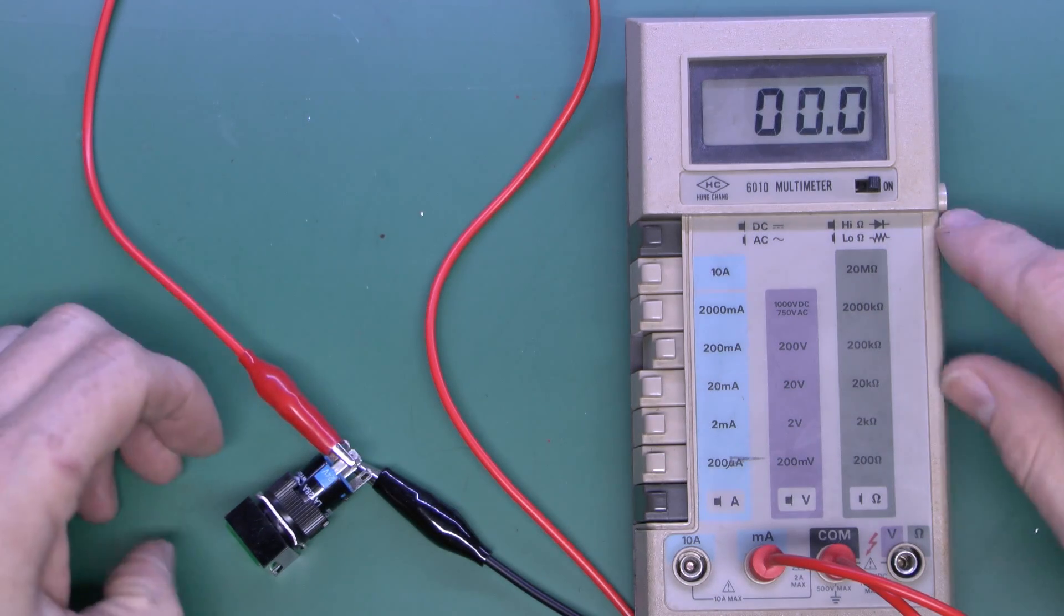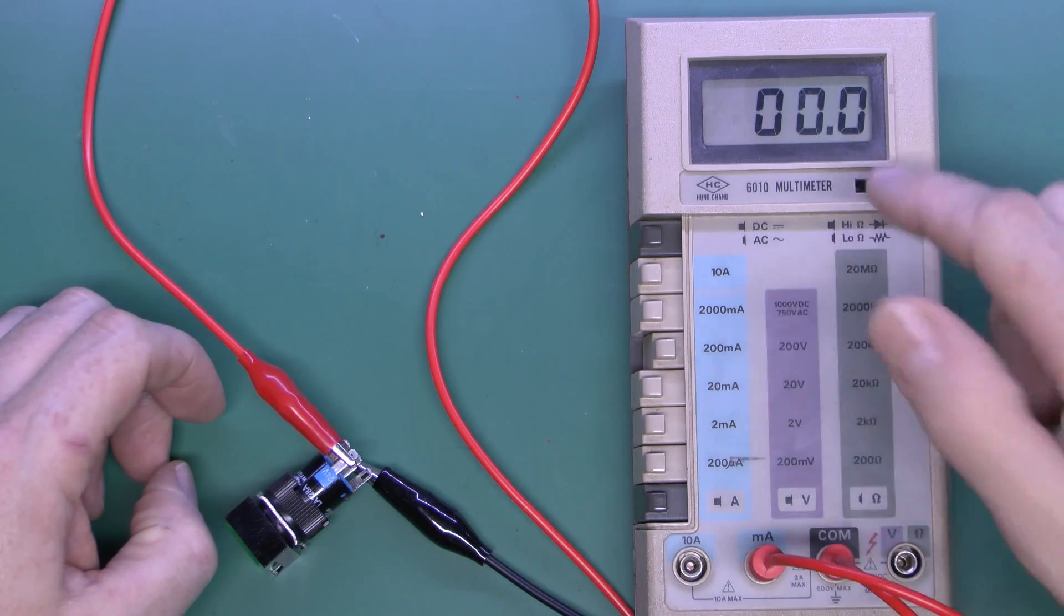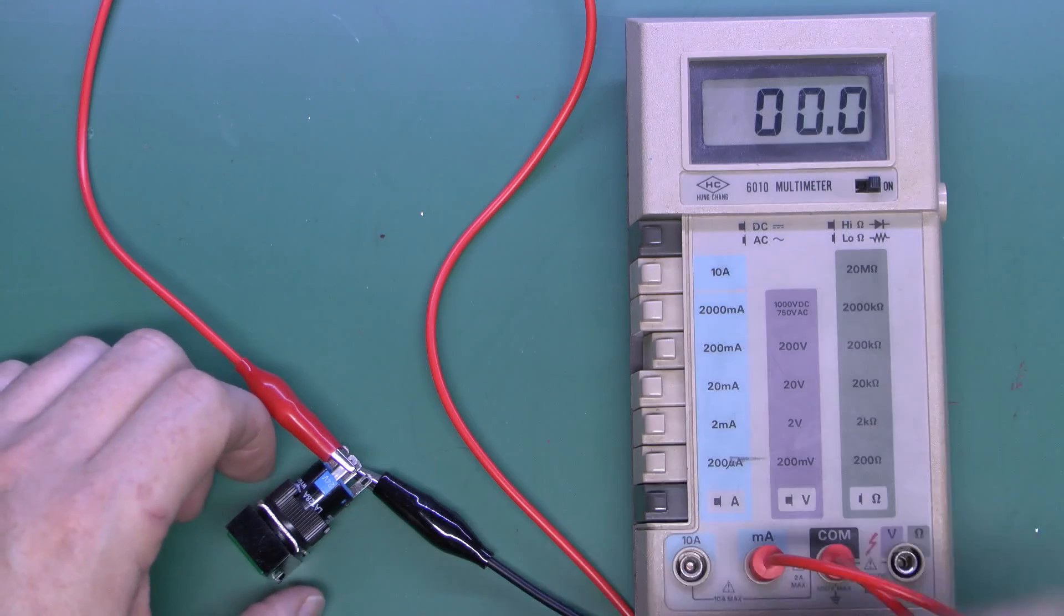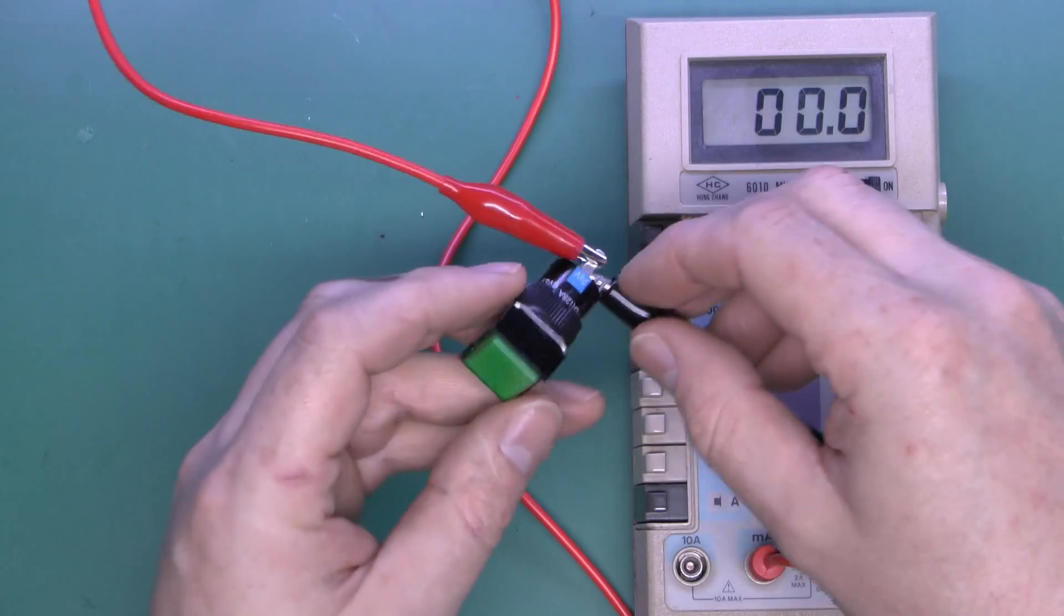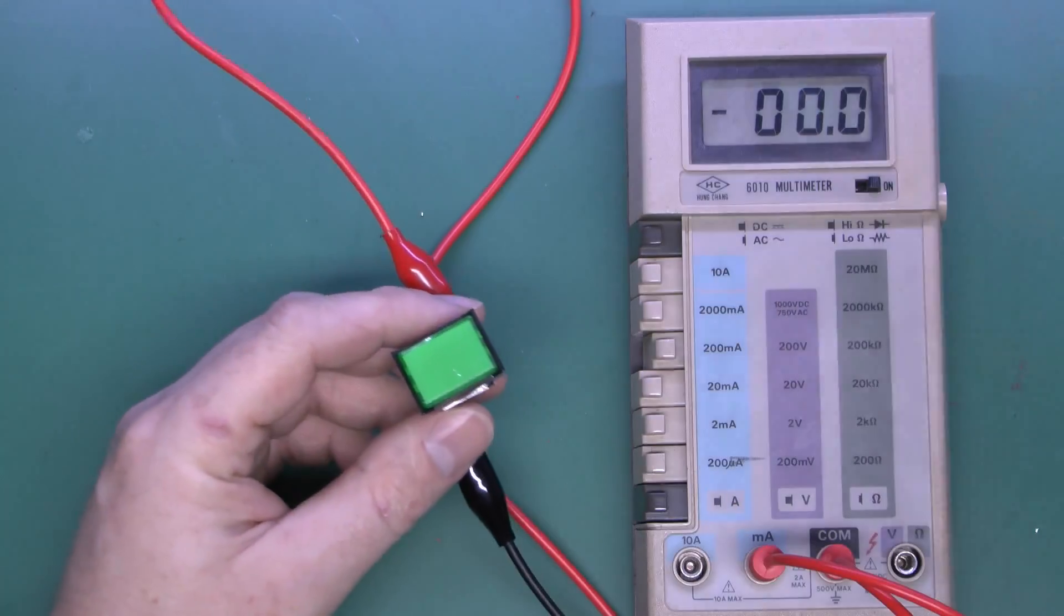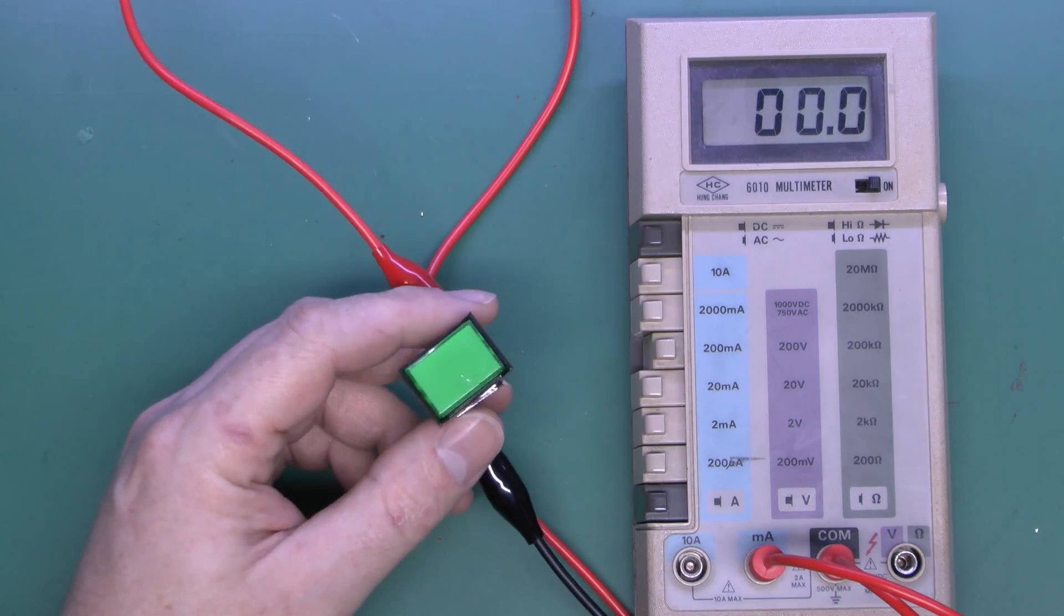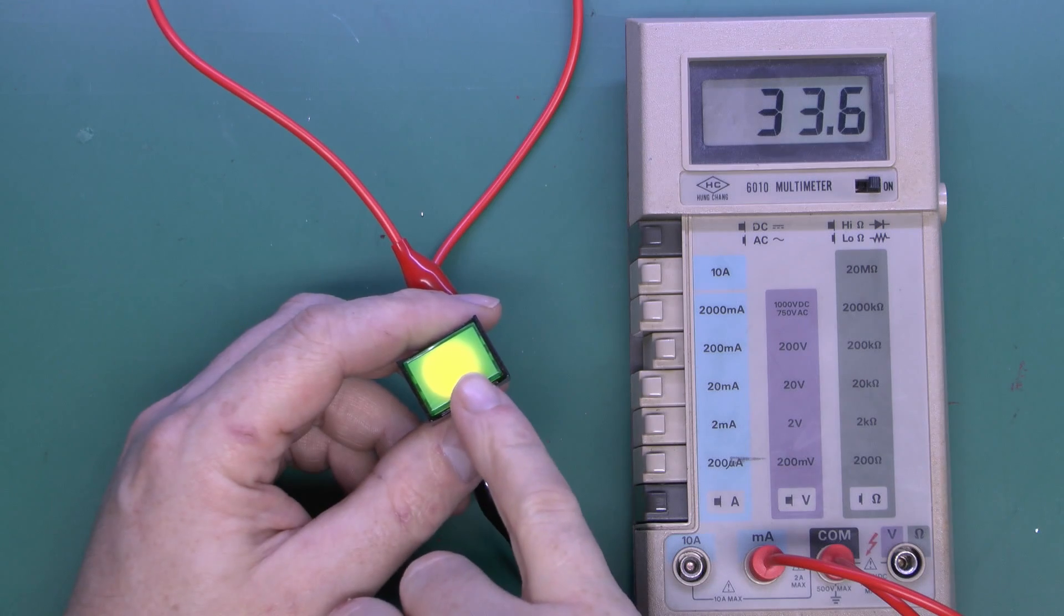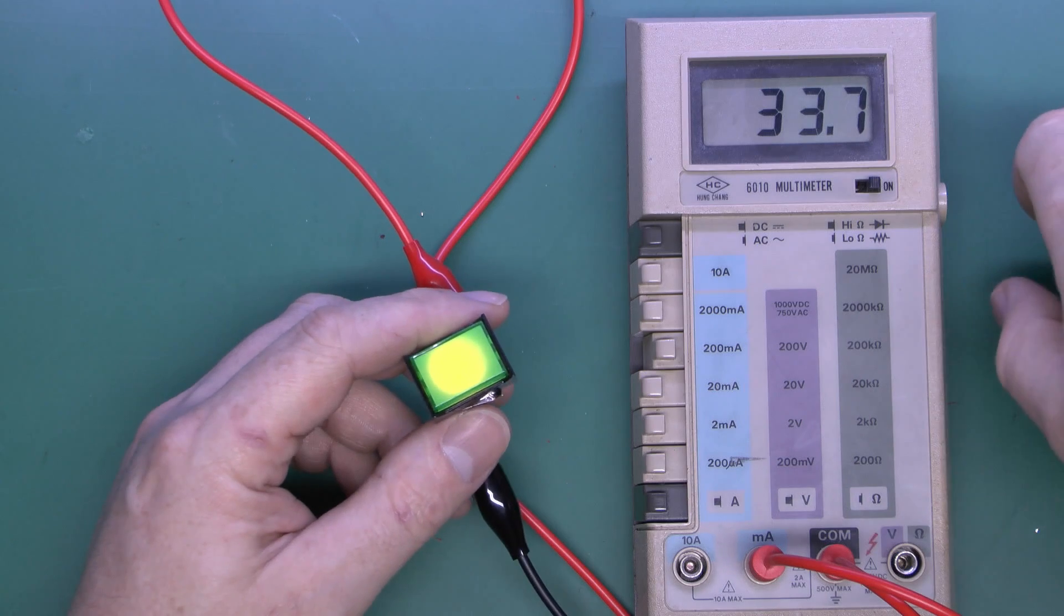Now I'll just demonstrate what the problem is. I've got the multimeter here set on the current range, 200mA, so it's basically just reading in mA. I've just connected it to the two outer terminals there, which are the illuminating part. I've got 24V supply here on the shelf, so if we switch on the supply then we can see that it does illuminate. We've got the current here shown as 33.7mA.